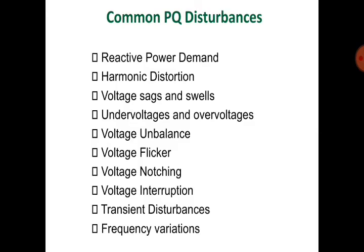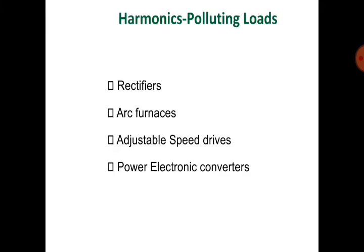Common power quality disturbances include: reactive power demand, harmonic distortion, voltage sags and swells, under-voltages and over-voltages, voltage unbalance, voltage flicker, voltage notching, voltage interruption, transient disturbances, and frequency variations. We will now see all these disturbances in some detail.